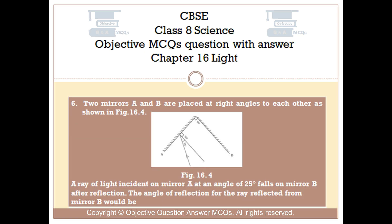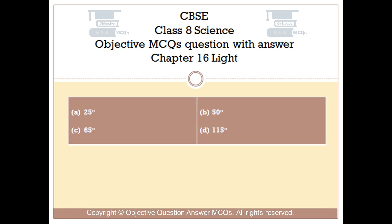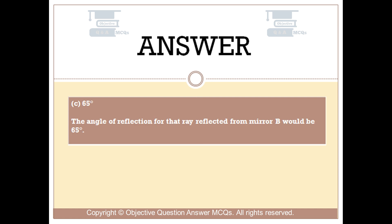Question number 6: Two mirrors A and B are placed at right angles to each other as shown in figure 16.4. A ray of light incident on mirror A at an angle of 25 degrees falls on mirror B after reflection. The angle of reflection for the ray reflected from mirror B would be. Option A: 25 degrees. Option B: 50 degrees. Option C: 65 degrees. Option D: 115 degrees. The right answer is option C — 65 degrees.